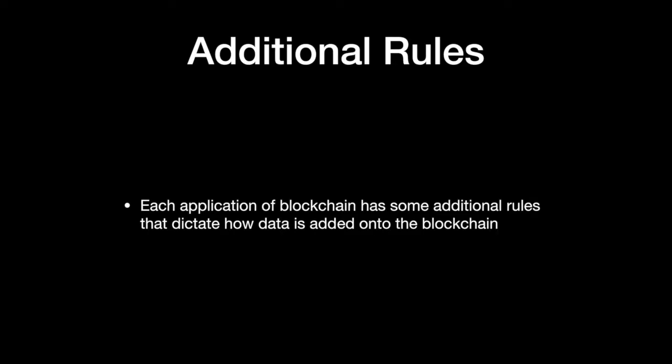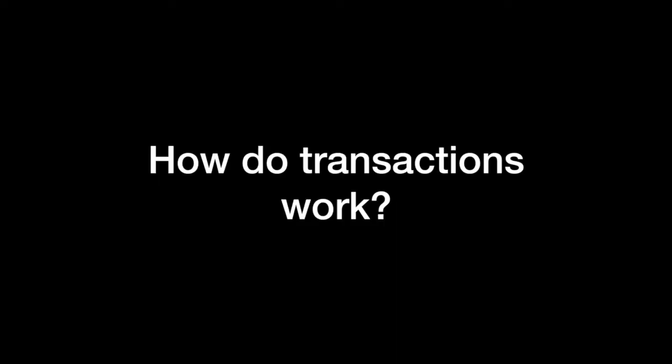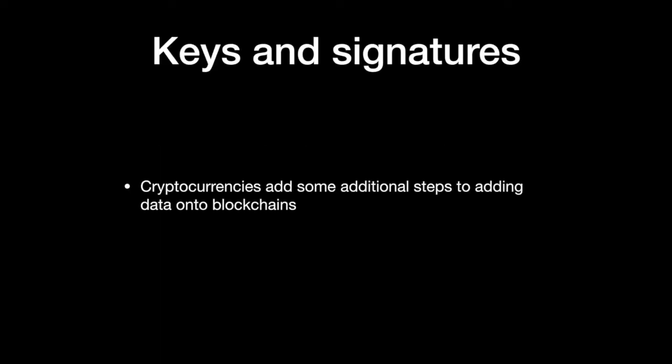Each application of blockchain has some additional rules that dictate how data is added onto the blockchain. When miners want to update the blockchain with important data like transactions, they must take extra steps to make sure what they're adding is legitimate. For example, you need to make sure that BLT actually has 5000 bitcoins in its balance, and also that BLT actually wants to send those 5000 bitcoins to CrazyMiner123.